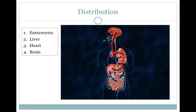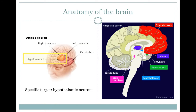From here, the drug enters the hepatic portal vein where it is taken to the liver. Some MDMA is metabolized into an inactive form as the dose passes through the liver on first pass, but most of the drug is transported to the heart via the inferior vena cava and then through systemic circulation into the brain, where it can cross the blood-brain barrier again by simple diffusion or through the use of SERTs.